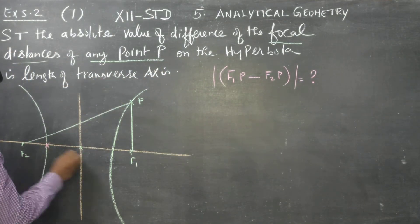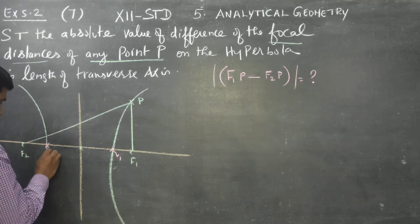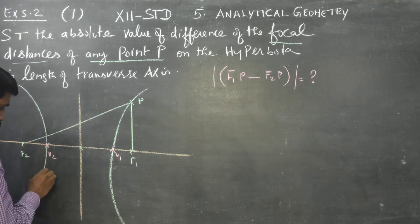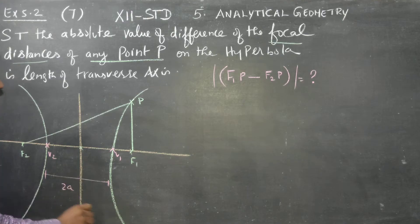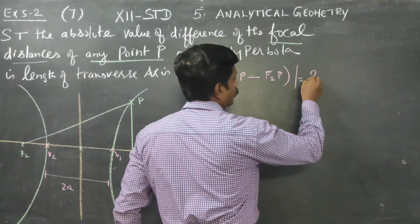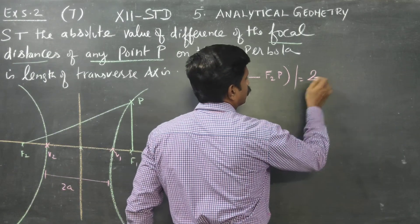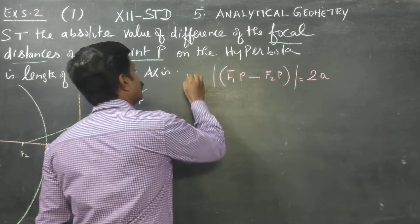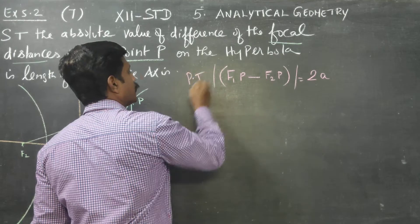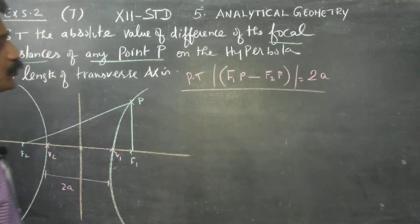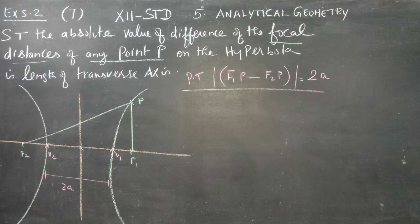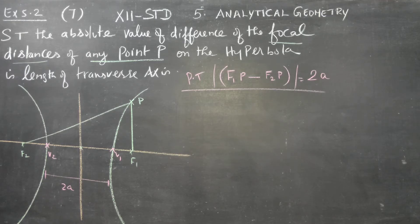The transverse axis goes from vertex V1 to vertex V2. This is the length of the transverse axis, which equals 2A. So the answer is 2A, and we are going to prove that |F1P − F2P| = 2A.